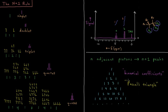And then the magnitude of these peaks is determined by what are called binomial coefficients, which you can get from the mathematical idea called Pascal's Triangle.